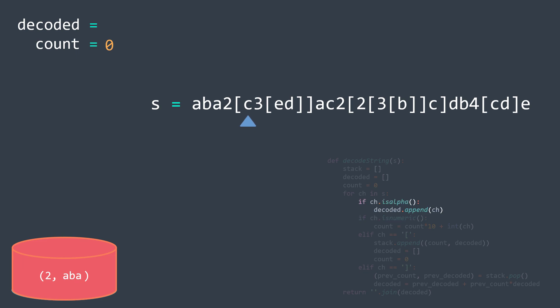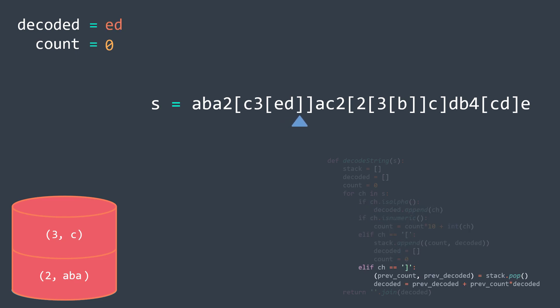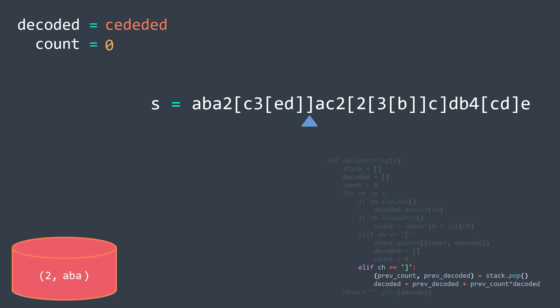The next two characters are letters, we add them to decoded. Then we find a closing bracket — we pop from the stack the previous count and decoded, and decoded becomes previous decoded plus previous count times the actual decoded. In our case it becomes c plus 3 times ed.